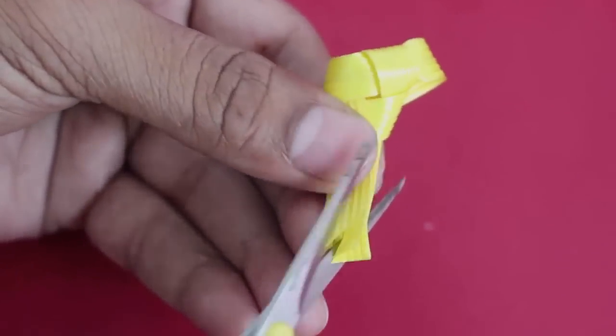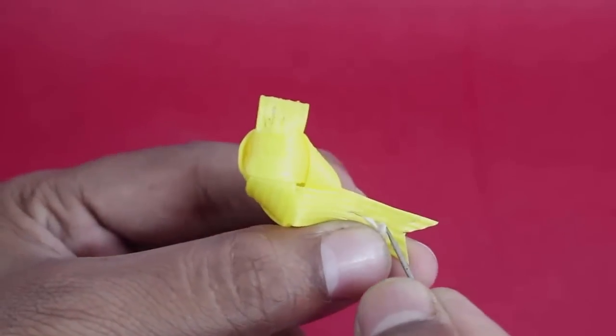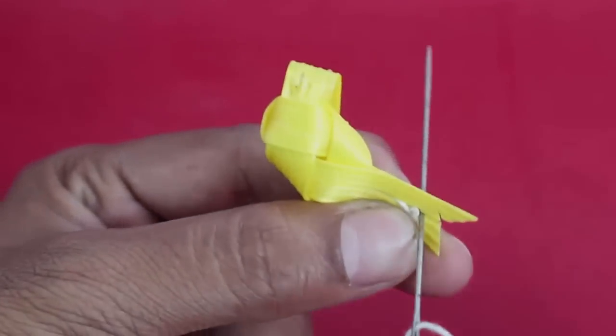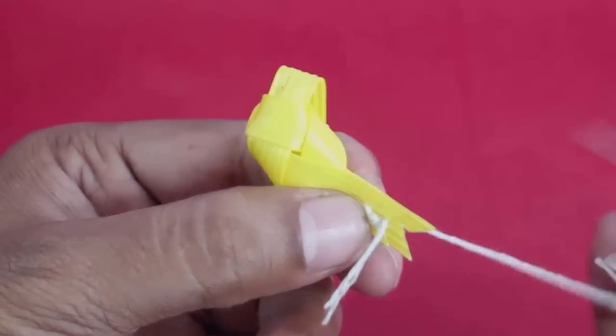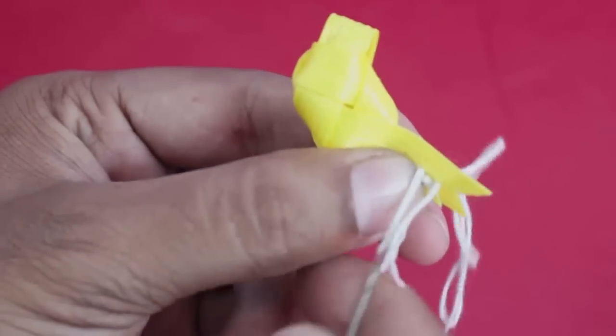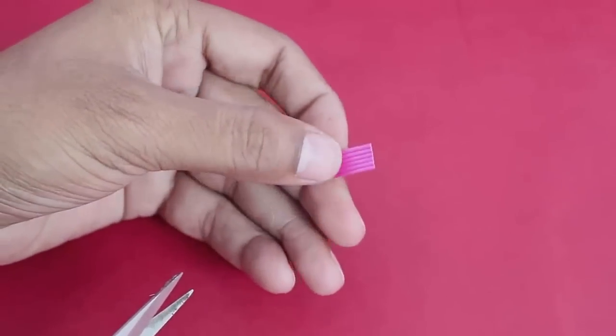Make a small V notch on the tail end, and then sew both the ends with a needle or a thread. You can also staple them. This way the bird will not open up.